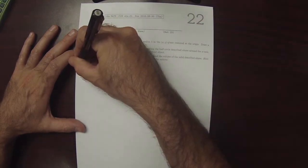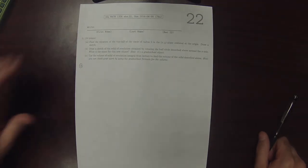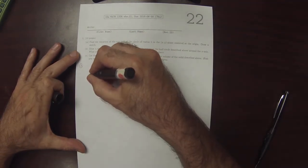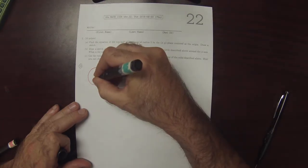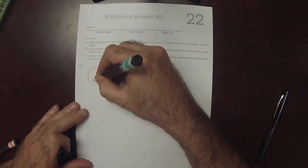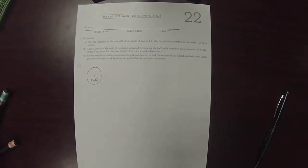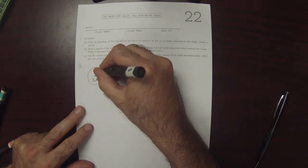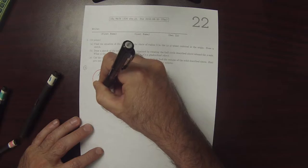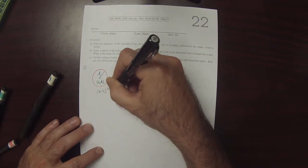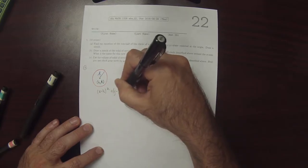So for Part A, you can recall that given a circle with center h, k, and radius r, the equation for this circle is x minus h squared plus y minus k squared is r squared.